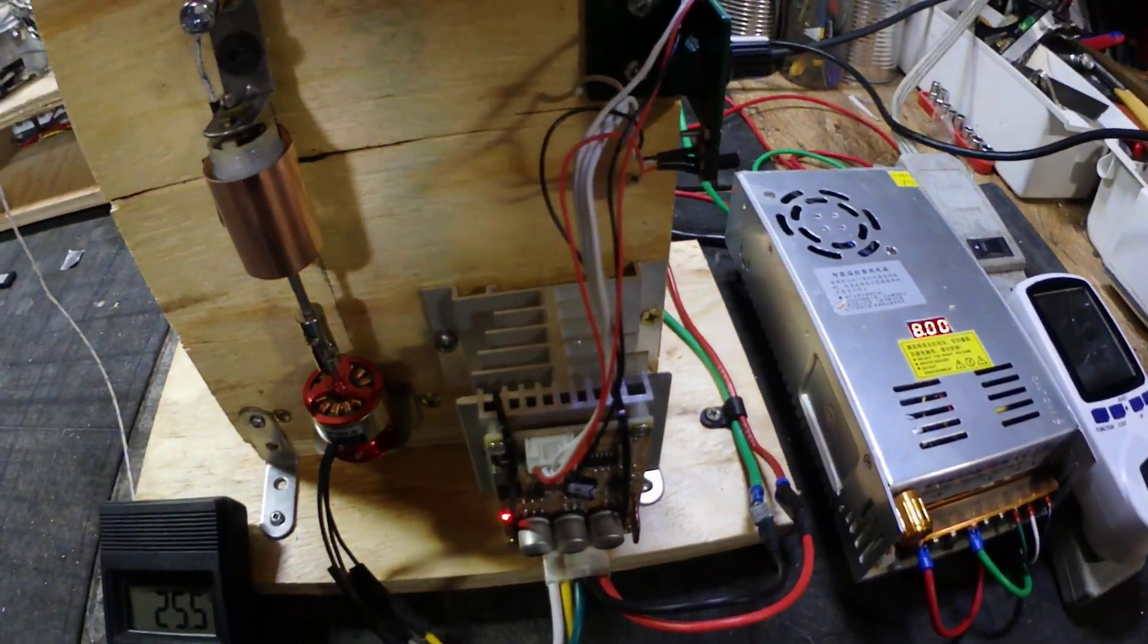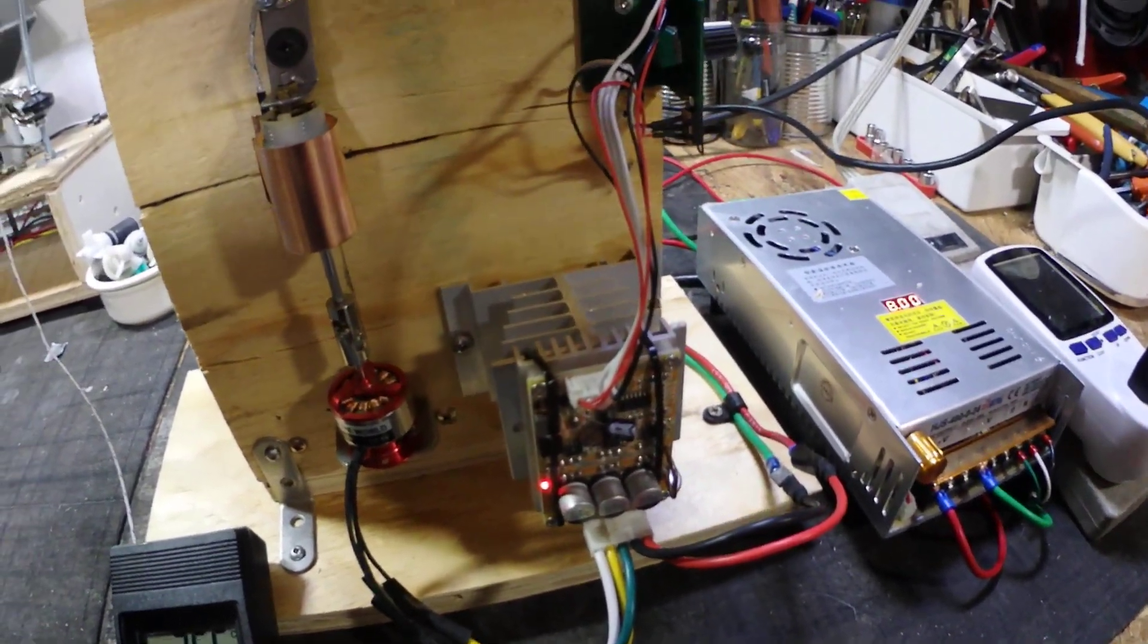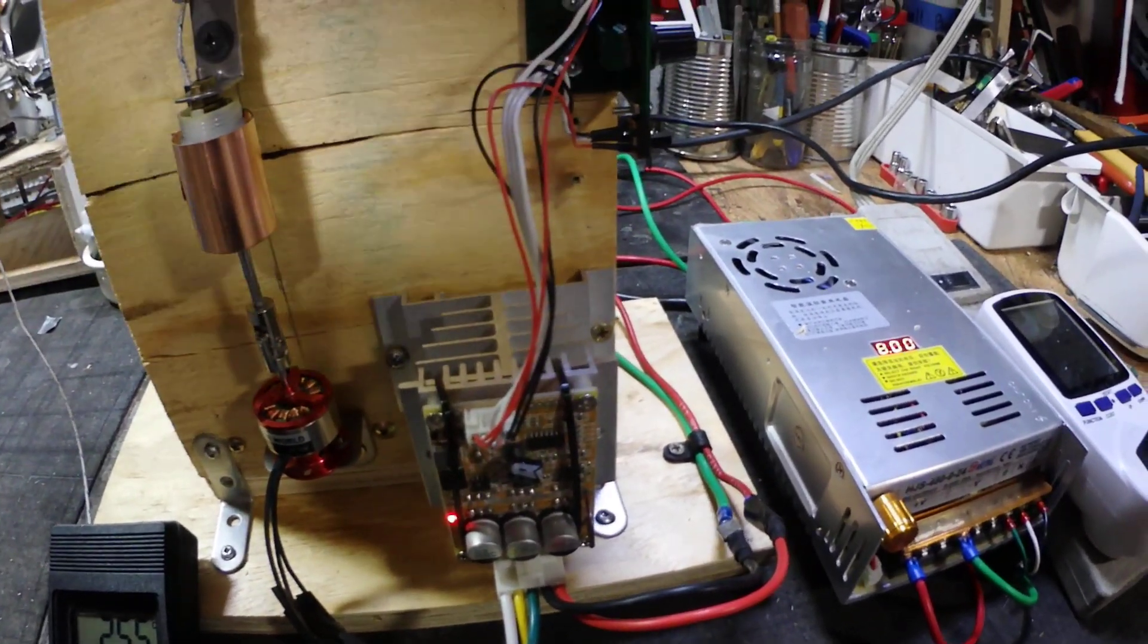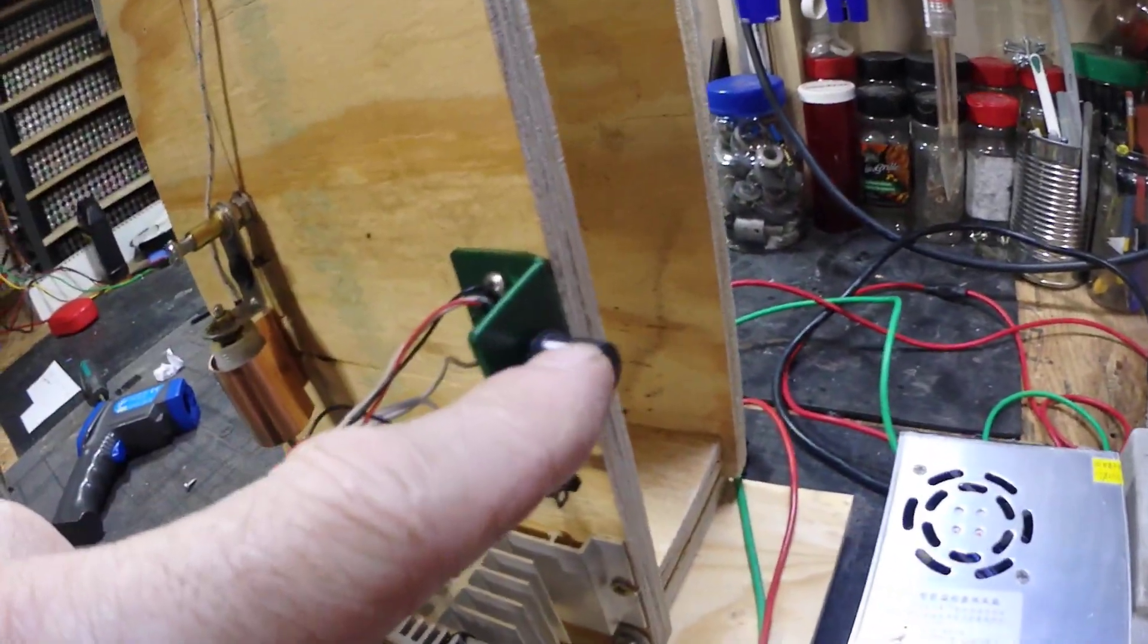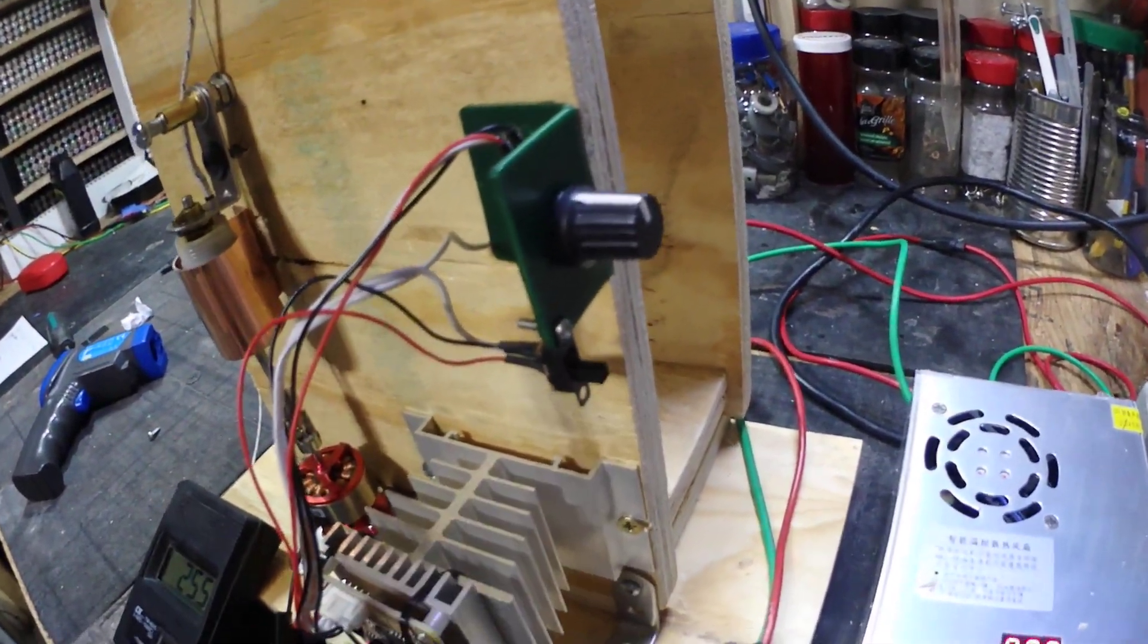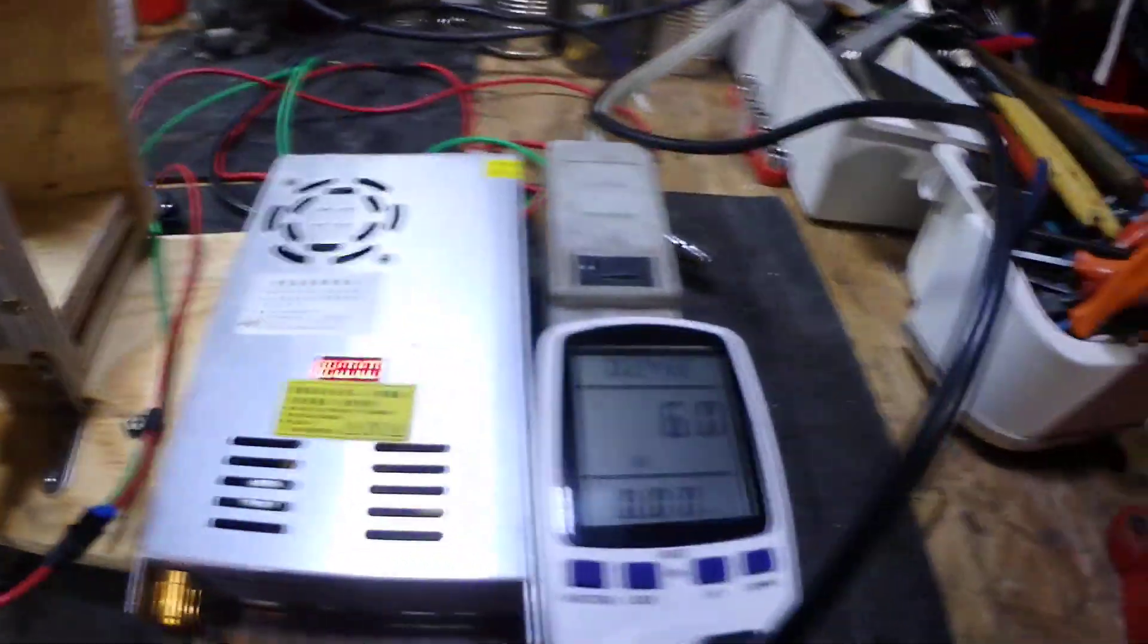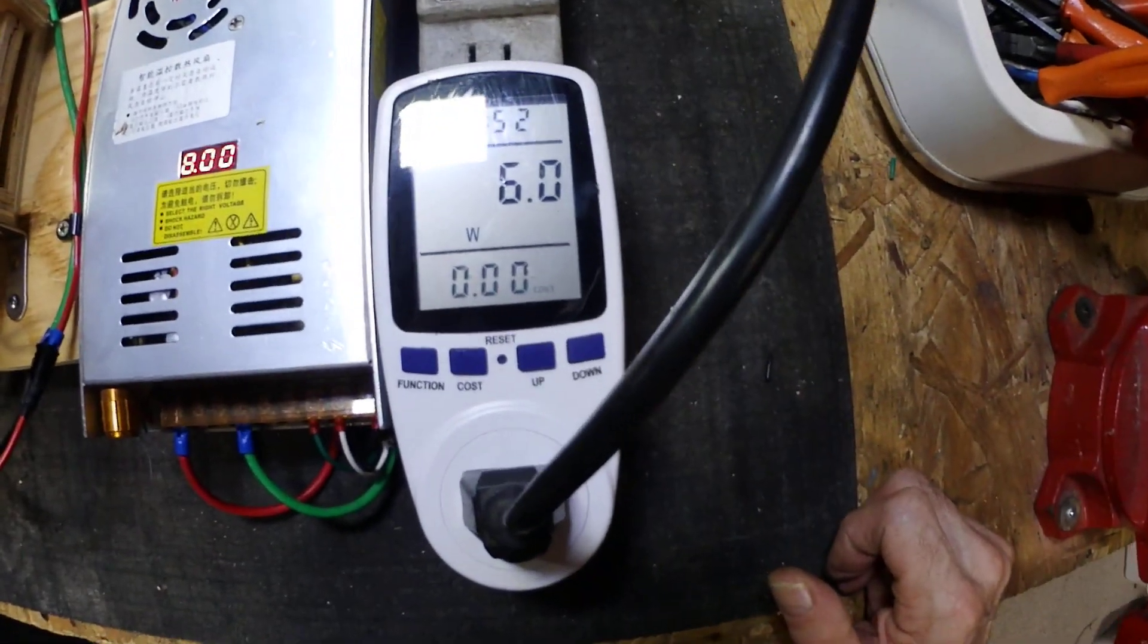This is a 350 watt brushless motor controller and it'll take five to thirty-six volts. Has a little potentiometer and a reverse switch that I can adjust the direction. So at idle the switch mode power supply takes six watts.